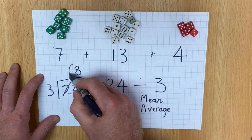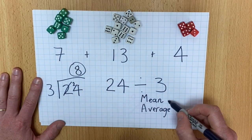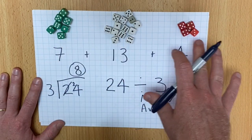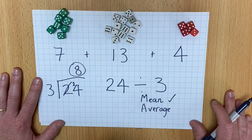So the mean amount of dice in these three groups is eight.